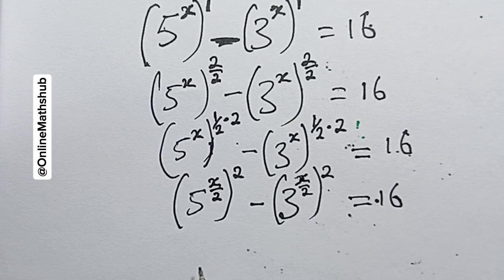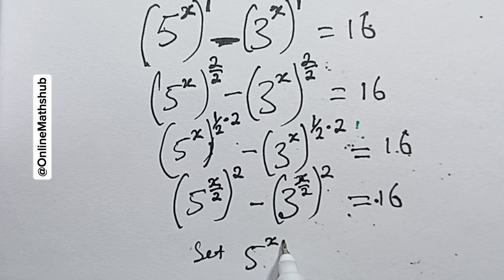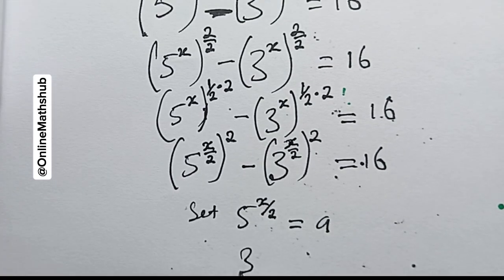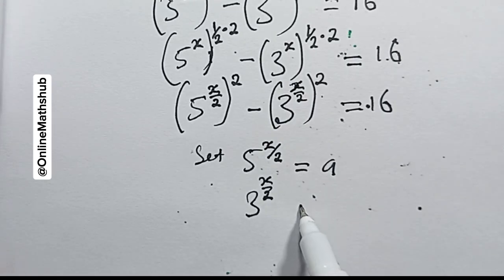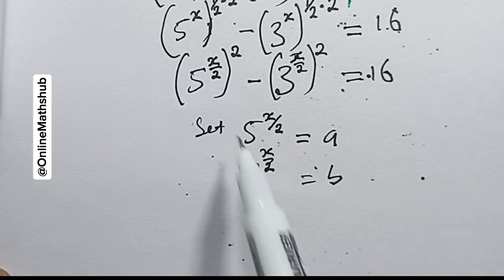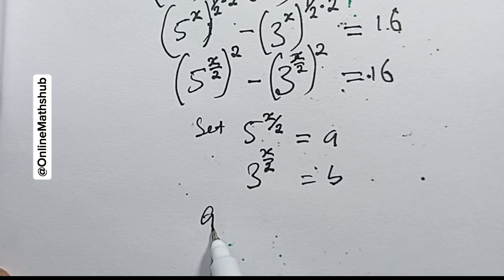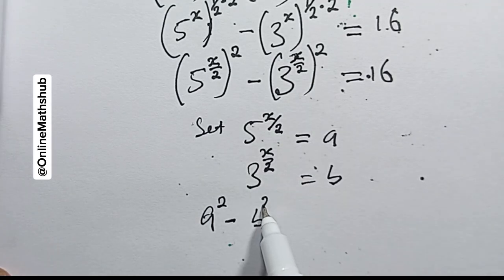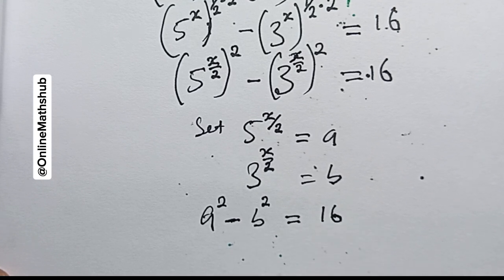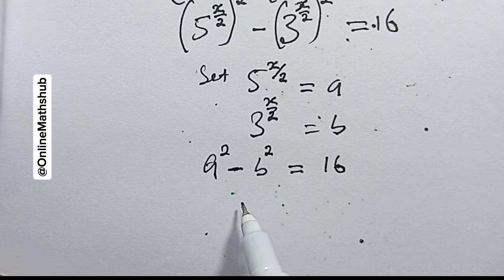To simplify the writing, I'm going to set 5^(x/2) equal to a, and set 3^(x/2) equal to b. My equation now reduces to a² minus b² equal to 16.